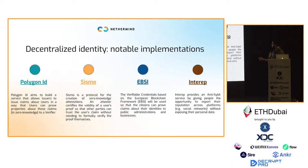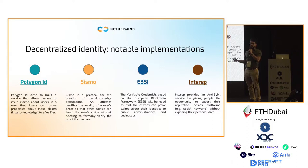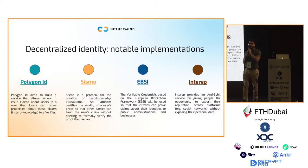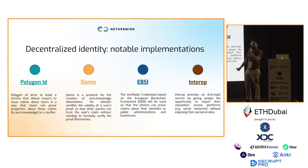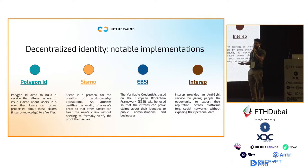Some notable implementations we found: Polygon ID, which allows managing identities and making zero-knowledge claims about them; Sismo, a protocol for the creation of zero-knowledge attestations; protocols already addressing how to integrate real-world data and pass it to web3; Candid, which proposes a mechanism for identities of people in the US; EBSI, a mechanism for people in the European Union; and Gitcoin Passport, an anti-Sybil service that analyzes the problem of bringing web2 reputation into web3.